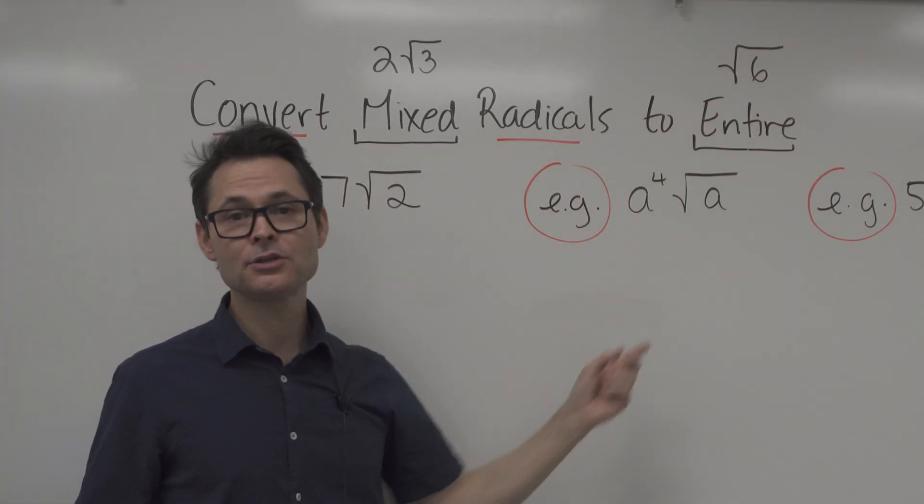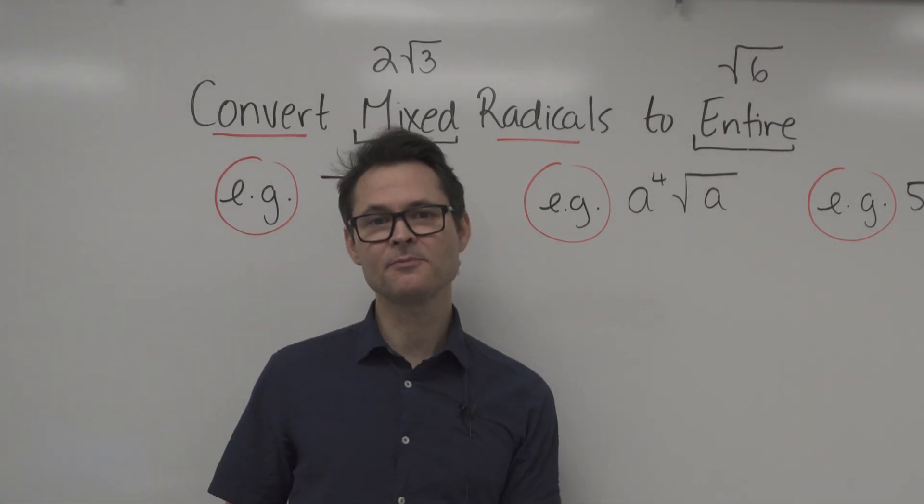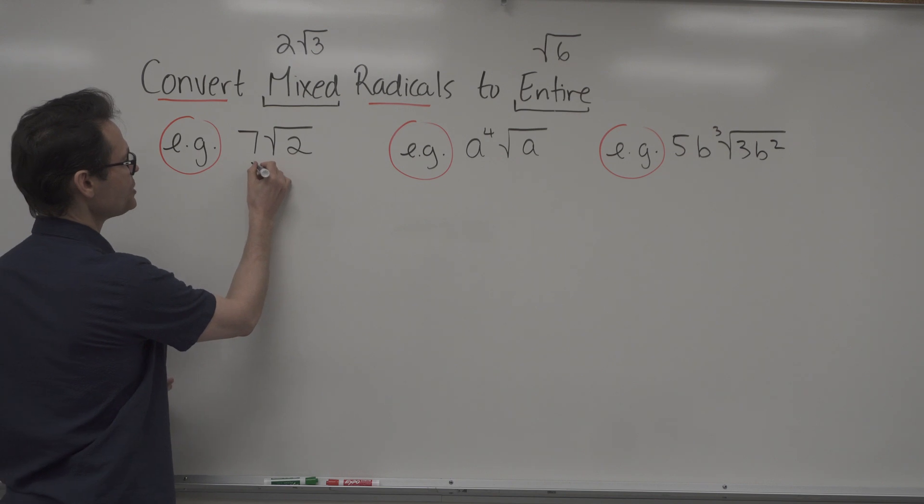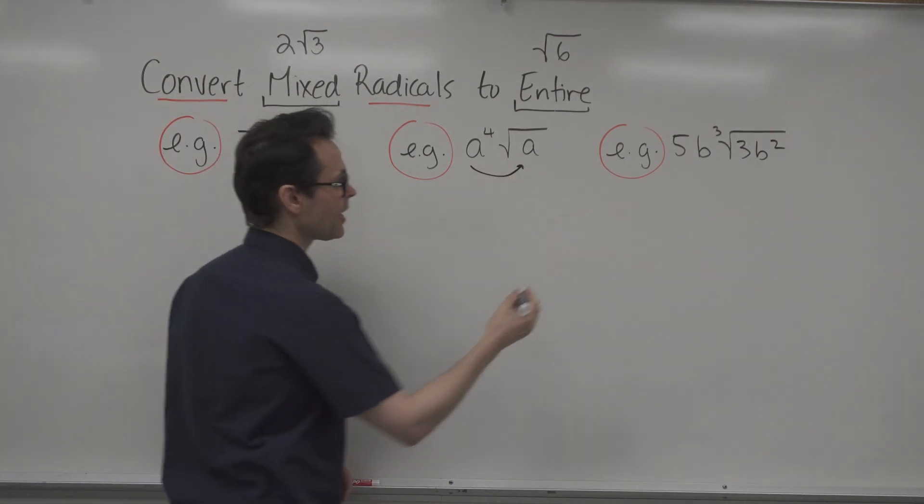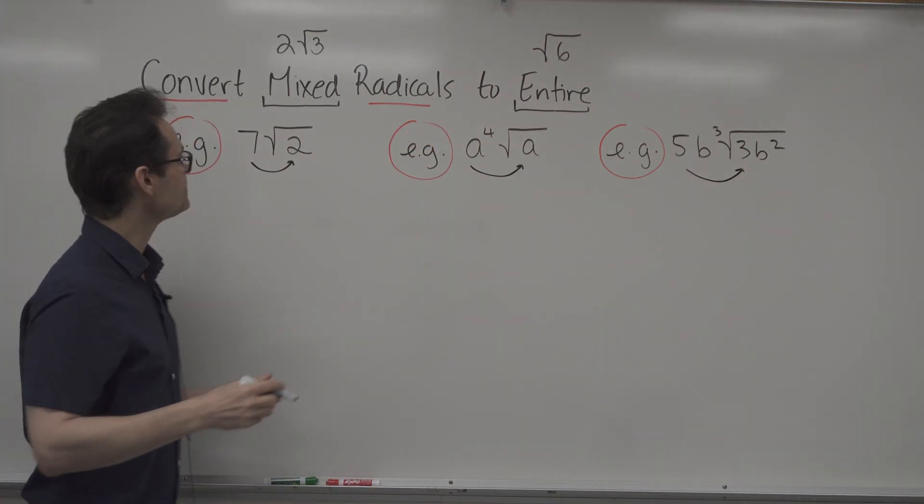One of the things that you need to know how to do is take your mixed radicals, these are three examples of mixed, and turn them into entire. The way to think about that is you want to move number inside the radical. That's the direction of the question.